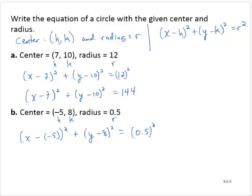Now, we don't like x minus negative 5, so we write (x + 5)² + (y - 8)² = 0.25.